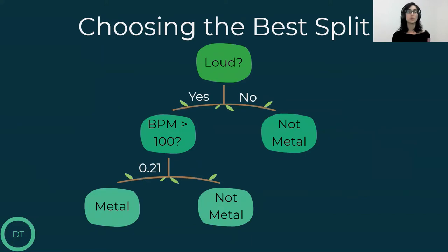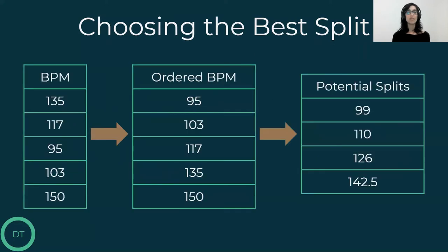So for every split we want to add, we just have to go through all of the options for the splits, calculate the Gini impurity and choose the best one. If we have a binary feature or a categorical one, it's easy to go through all of the options. But if we have a numeric one, it sounds a bit confusing because we can't go over all of the numbers. One thing we can do is order all the values in this feature, calculate the average between each two values and use those averages as the potential values for splits. So in this case, we will use the values 99, 110, 126, and 142.5 as the potential values for the split.